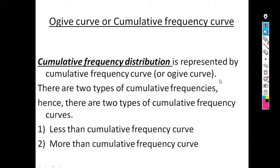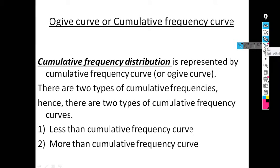Next is the ogive curve, or cumulative frequency curve. There are two types of cumulative frequency curves. The first is the less than cumulative frequency curve, and the second is the more than cumulative frequency curve.